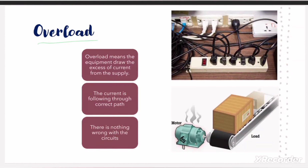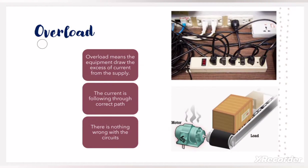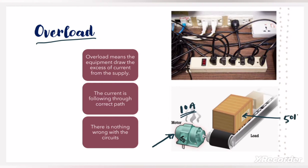First we will understand what is overload. Overload means when an equipment draws more than its rated current, then that equipment is said to be overloaded. For example, this motor is taking 10A of current, which is the rated current, when the load on this conveyor is 50 kg.